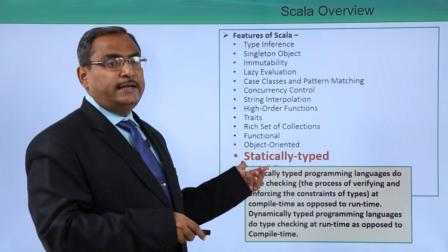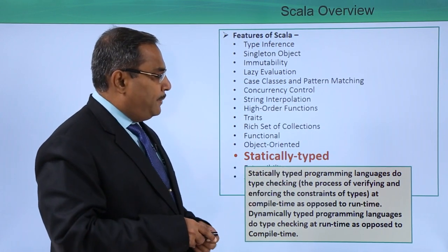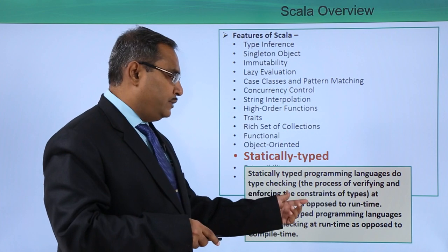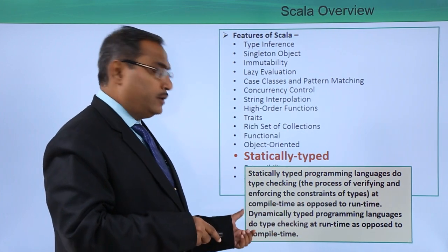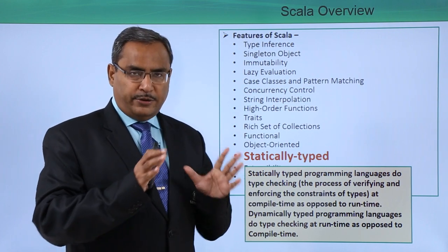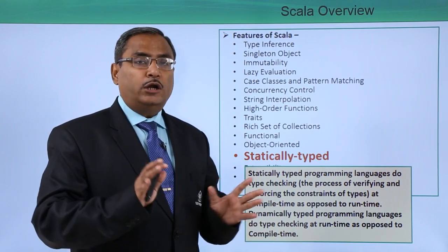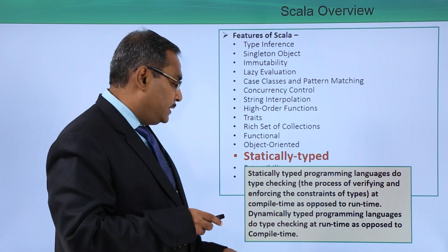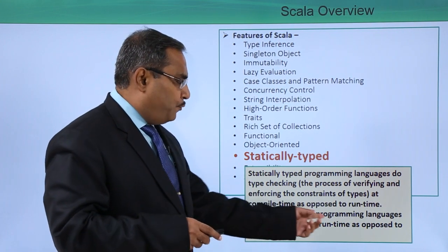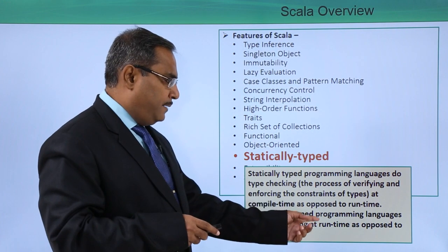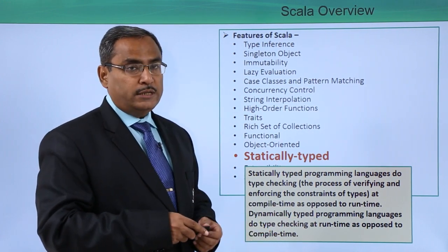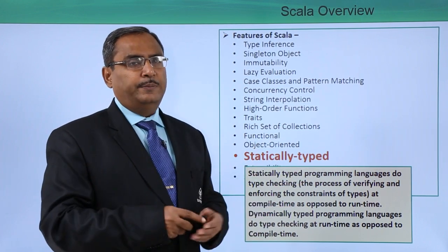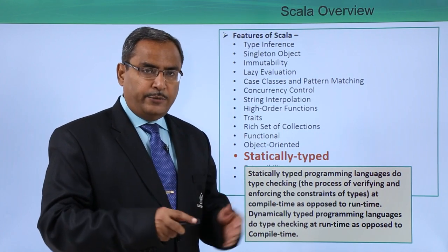The next feature is statically typed. Statically typed languages do type checking — verifying and enforcing the constraints of types — at compile time, as opposed to runtime. All variable types are defined during compile time. Dynamically typed languages do type checking at runtime. Scala supports statically typed variables.